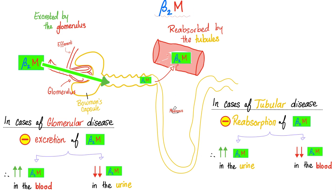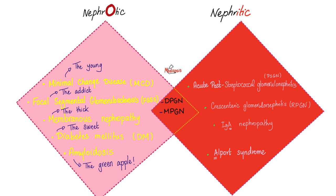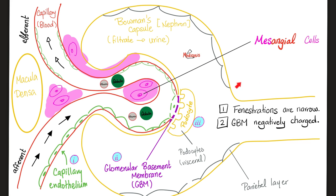Nephritic syndrome: clinically 7 features, histopathologically 4 subtypes. We have acute post-streptococcal glomerulonephritis, rapidly progressive glomerulonephritis, IgA nephropathy, and Alport syndrome. Then we have two conditions in the middle that could be nephrotic or nephritic — called nephrotic-nephritic. The first is diffuse proliferative glomerulonephritis, which can cause rapidly progressive glomerulonephritis. The second is membranoproliferative, with two subtypes: Type 1, associated with hepatitis B, hepatitis C, and cryoglobulinemia; and Type 2, the dense deposit disease with C3 nephritic factor.